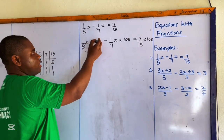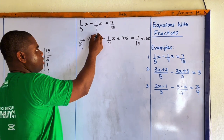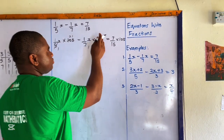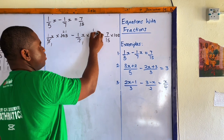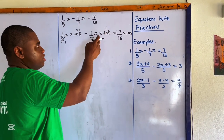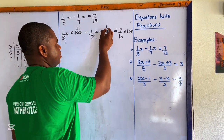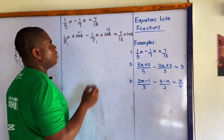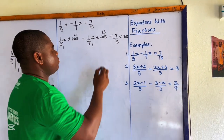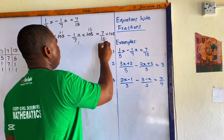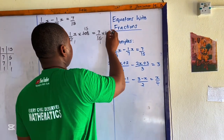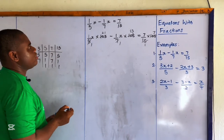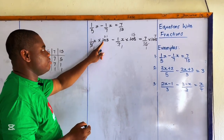Simplifying each term: 5 goes into 105 giving 21, so the first term becomes 21 over x. 7 goes into 105 giving 15, so the second term becomes 15 over x. And 15 goes into 105 giving 7, so the right-hand side becomes 7 times 7.